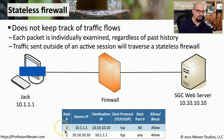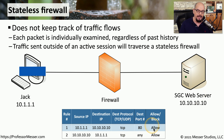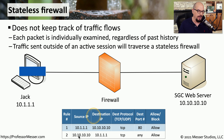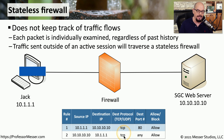This rule base has a first rule which says the source IP of 10.1.1.1, which is Jack's workstation, is able to communicate to 10.10.10.10, which is the SGC web server, using TCP over port 80, and that information is allowed. Since this firewall has no idea that a state of communication exists, it also needs a rule that allows traffic the other direction. So we have a second rule that allows 10.10.10.10, the SGC web server, to communicate to 10.1.1.1, Jack's workstation, using any TCP port, allowing that traffic to pass.